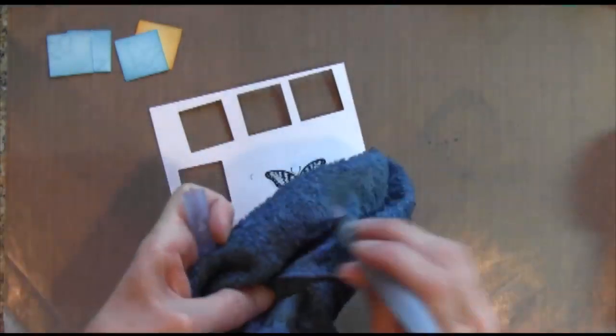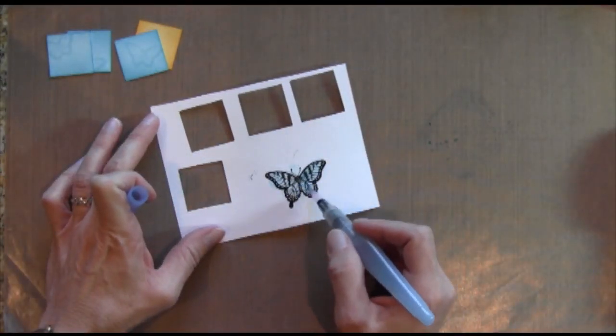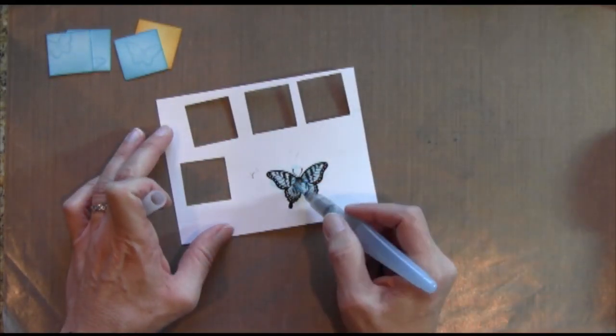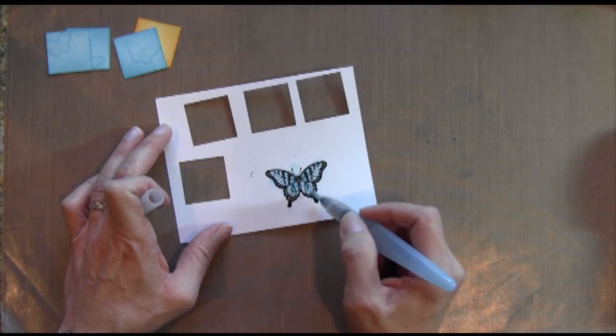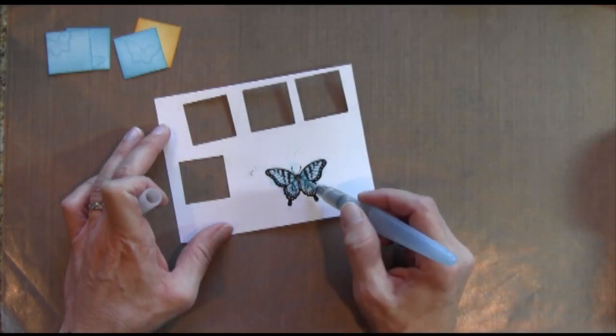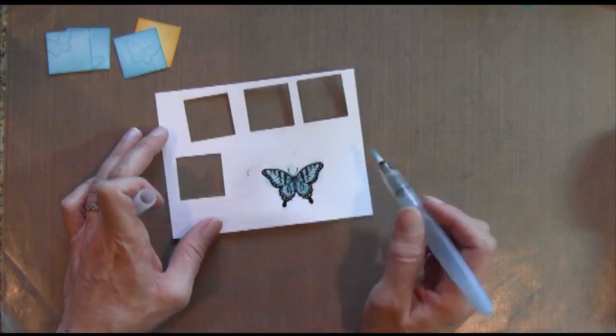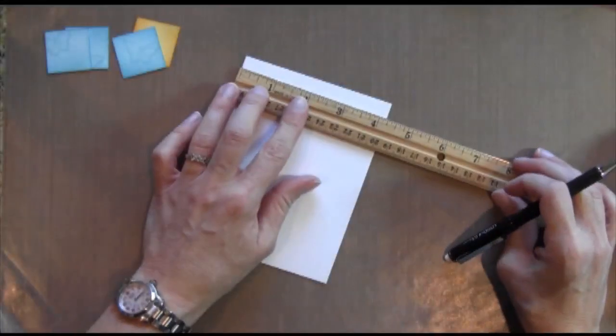I like to color the center of the butterfly a lot darker because then it looks like the wings are kind of coming out. It gives a little bit more perspective. So I try to do it pretty dark in the middle there. So I use the one that didn't have too much water in it, because more water makes it just a lighter color.